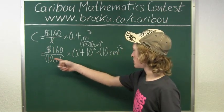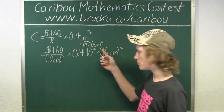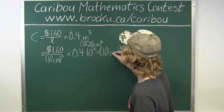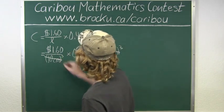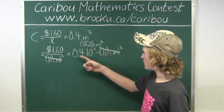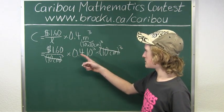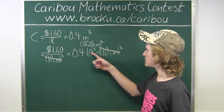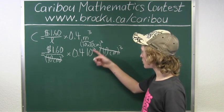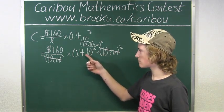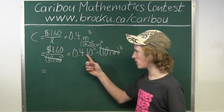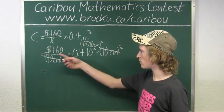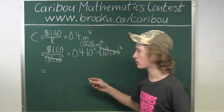So we know that the denominator and the numerator will cancel out. So we are left with $1.60 times 0.4 times 10³. So 1,000 times 0.4 is 400, which gives us $1.60 times 400.